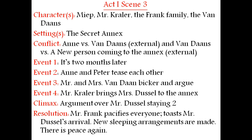Scene Three. The characters are Miep, Mr. Kraler, the Frank family, and the Van Daan family — similarly the same characters as in Scene Two. The setting is the secret annex, the same setting as the earlier scene. The conflict has moved to another dimension of external conflict: Anne versus the Van Daans, and the Van Daans versus a new person coming to the annex.